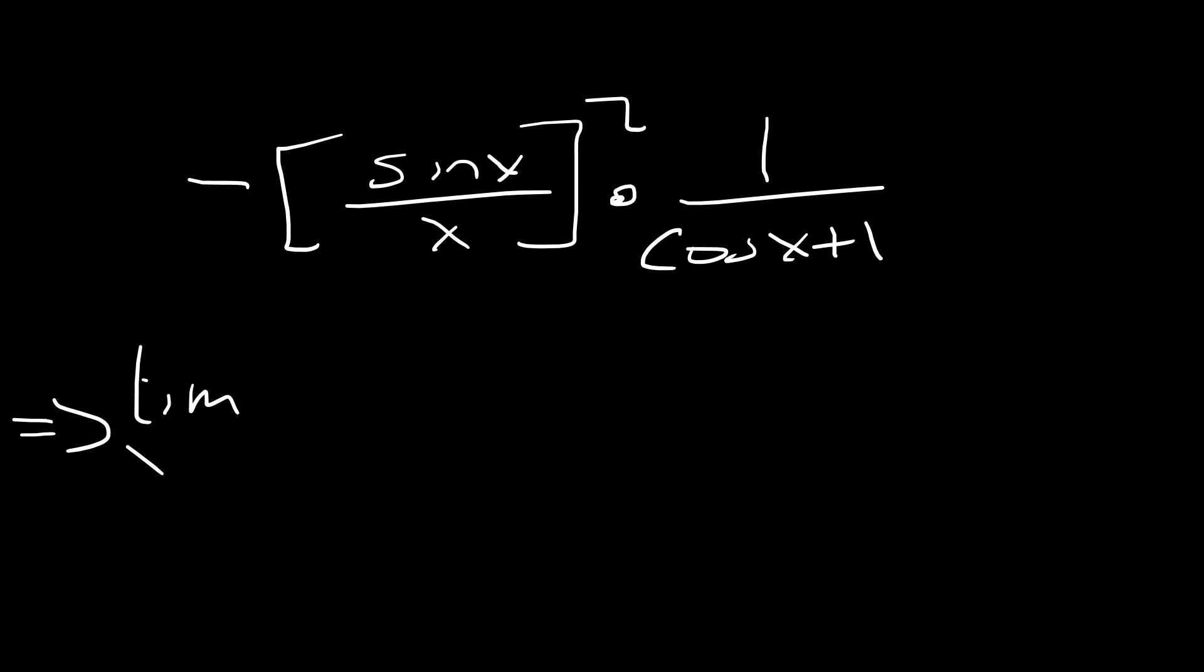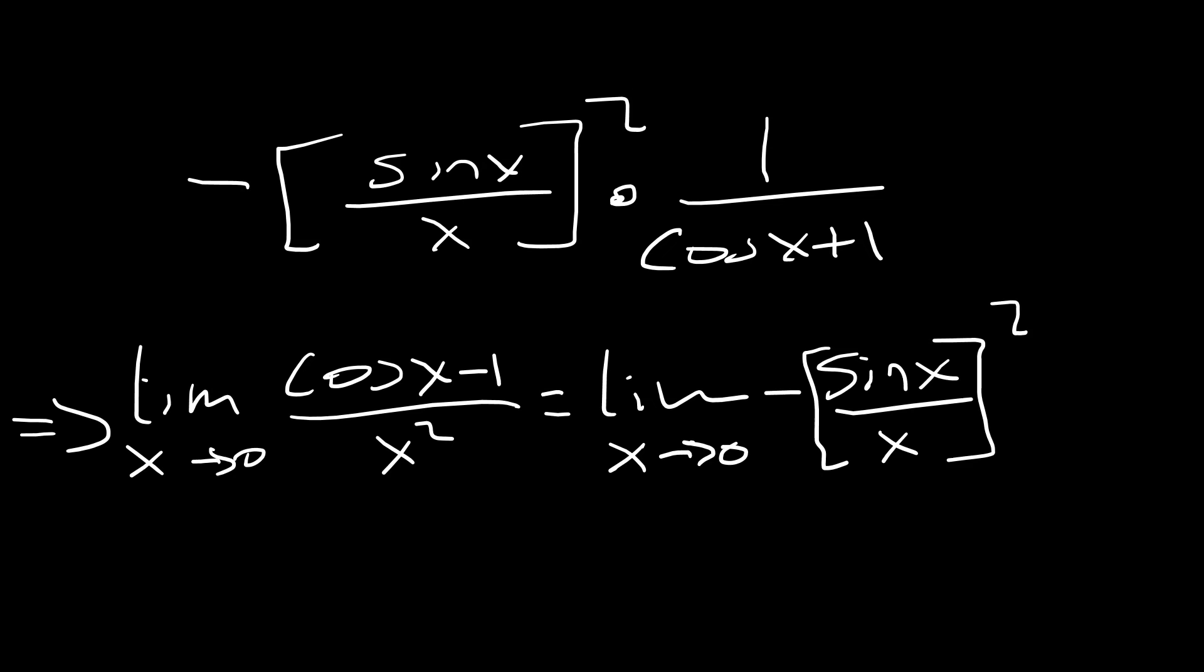Take a look. So that means that now the limit as x approaches 0 of that cosine x minus 1 over x squared is equivalent to the limit as x approaches 0 of negative sine x over x, that quantity squared, times 1 over cosine x plus 1. These two limits are equivalent.